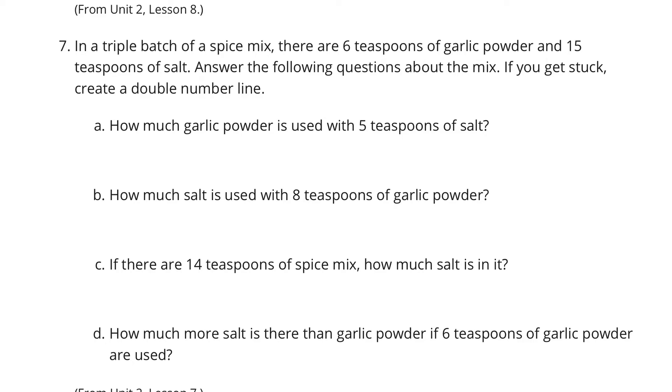How much garlic powder is used for five teaspoons of salt. Well, we had six teaspoons of garlic powder to 15 teaspoons of salt. And now we want to get to five teaspoons of salt. Well, what are we doing here? 15 divided by three gets me to the five salt. So if I take six and divide by three, I would get two teaspoons of the garlic powder.